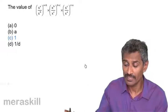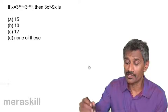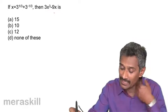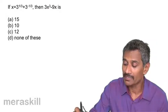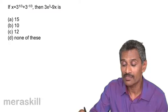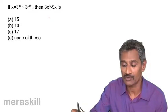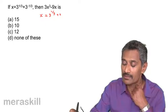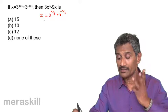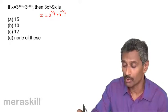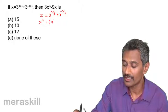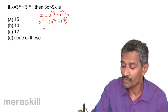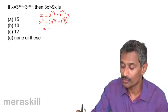Now we have: x equals 3 raised to 1 by 3 plus 3 raised to minus 1 by 3. What would be 3x cubed minus 9x? This is similar to an earlier sum. We need to cube both sides, so x cubed equals 3 raised to 1 by 3 plus 3 raised to minus 1 by 3, the whole cube. We are going to use the rule that a plus b the whole cube is a cubed plus b cubed plus 3ab into a plus b.